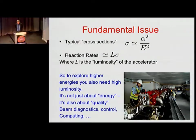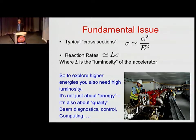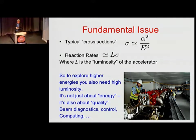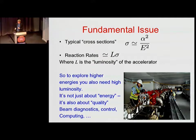This is the only equation in my talk, so don't panic. There's a typical cross-section — particle physics speak for the probability of something happening. Nothing happens with certainty; you have to do lots of events, lots of collisions, to get an overall picture of what the theory is. As you go up in energy, the rate at which reactions occur — the probability with which they occur — goes down. That's a pure dimensional argument you can't escape. From purely fundamental reasoning, reaction rates will go down unless we increase the intensity — the luminosity — of the beams.